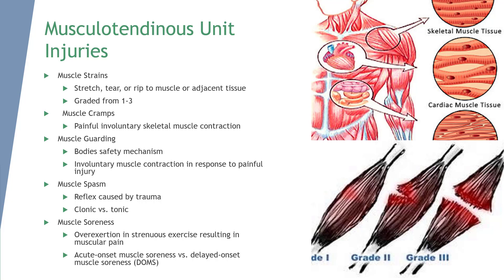A grade 2 strain involves a number of fibers being torn, and active contraction is painful. Usually, there is a depression or divot that is palpable and may even be visible. There should be some swelling and discoloration as a result of this injury.